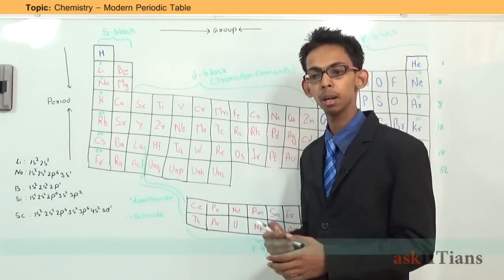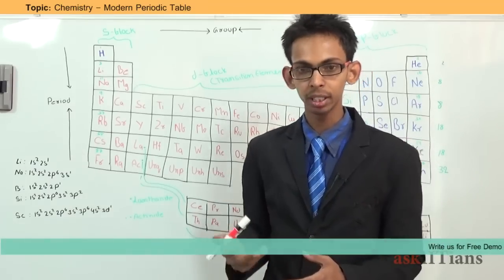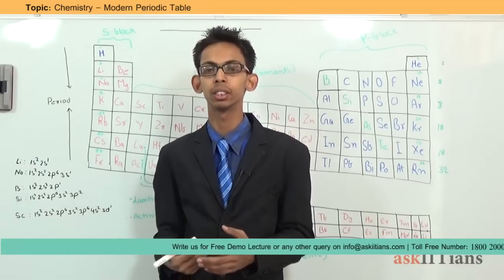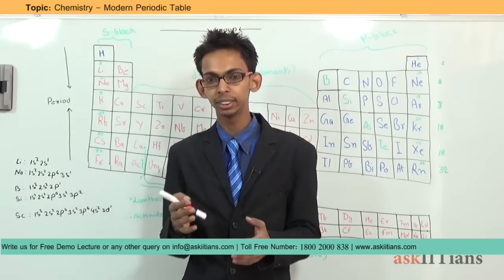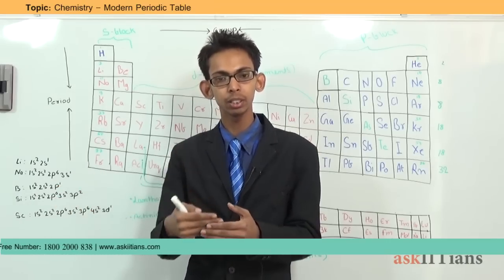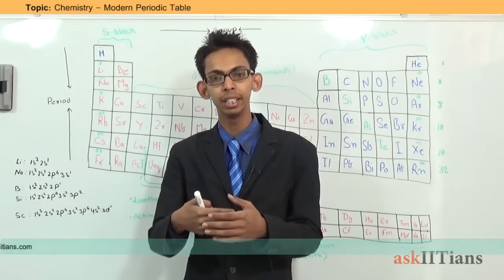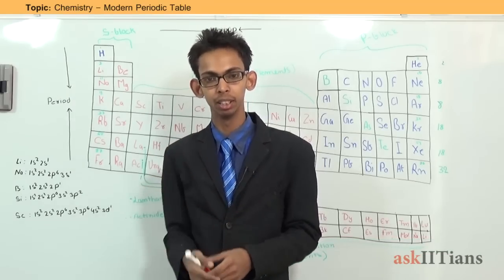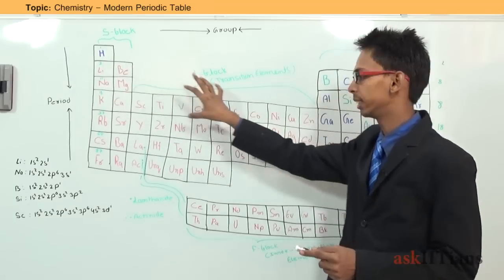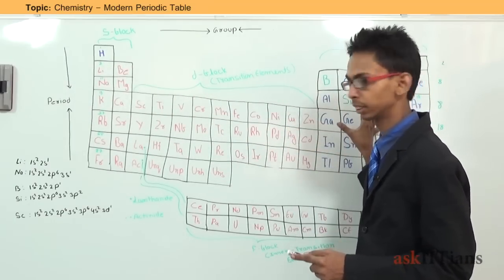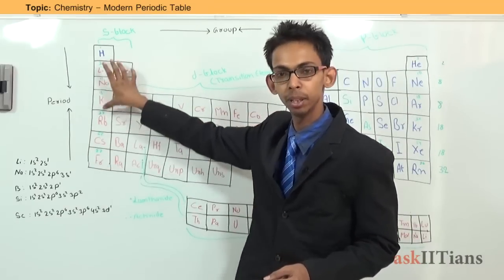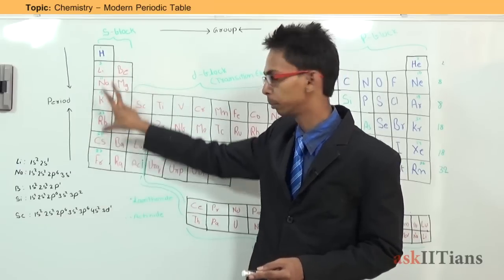The modern periodic table is based on a law known as the modern periodic law, which states that the periodic properties of elements are a periodic function of their atomic numbers. When we arrange elements in increasing order of their atomic numbers, the properties repeat periodically after some interval. On this principle, the periodic table is built, and elements present in the same group have similar properties.